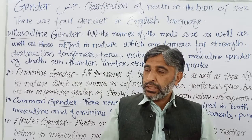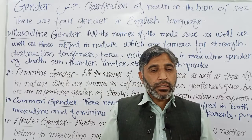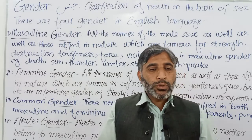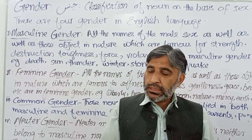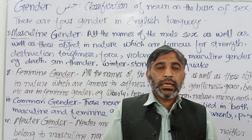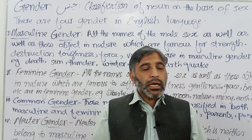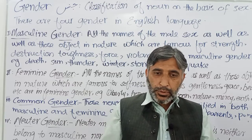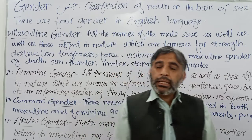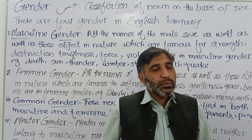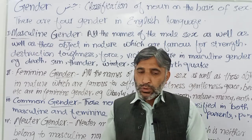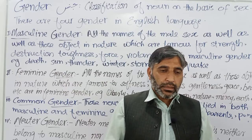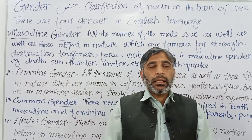In English there are four genders. First is masculine gender — jo muzakkar jins ke liye istemal hoti hai. Second is feminine — jo clearly muannas ya madah jins ke liye istemal hoti hai. Third is common gender — jo muzakkar aur muannas dono ke liye istemal hota hai. And the fourth is neuter gender — jo na to muannas ho na muzakkar ho, jo bejaan cheezon ke liye zyada tar istemal hoti hai.